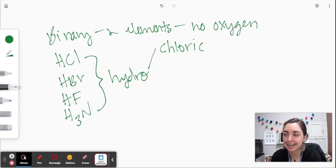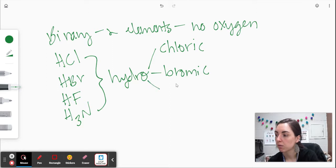So where you would have put that ide, you put the ic. This one would be hydrobromic, hydrofluoric, and hydronitric.